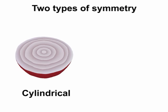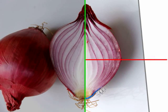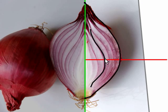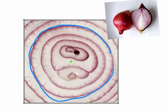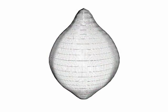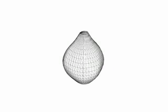We consider two types of rotational symmetry: cylindrical symmetry and n-fold symmetry. For the case of cylindrical symmetry, the user first draws curves on an image of a vertical cross-section, then draws curves on an image of a horizontal cross-section, and finally the system generates 3D surfaces by sweeping.